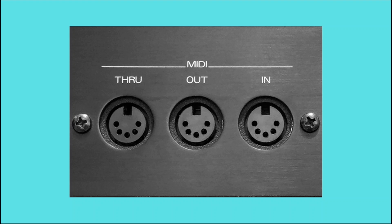Now most synths will have a MIDI in and a MIDI out port but not all of them will have a MIDI through port, but before you go running out to buy a MIDI through box, check whether your machine has soft through available as many of them do. So just to recap on MIDI ports: the in port receives data into the synth, effectively giving that synth some instructions on what it needs to do, and the out port sends the data out of the synth, basically sending instructions off to somewhere else. The through port receives an identical copy of what is received at the in port and passes that on to another synth.